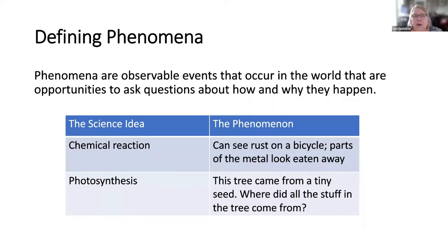You can do this by starting with a phenomenon as an anchoring part of your lesson. A phenomenon is just an observable event that occurs in the world that you can ask questions about and experiment to try to figure out what's going on. If your science content is learning what a chemical reaction is, your phenomenon could be showing them a picture of rust on a bicycle where parts of the metal have been eaten away and they have to experiment to figure out why the metal is being corroded.